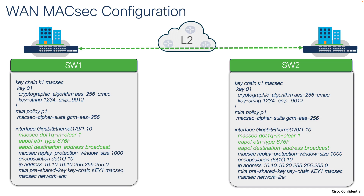Now let's look at what WAN MACsec configuration looks like. WAN MACsec configuration is very similar to traditional MACsec. In this example, we're establishing secure connectivity between Switch 1 and Switch 2 separated by a Layer 2 service provider or multiple Layer 2 hops. We configure a key chain and key string — the same on both switches — then enable an MKA policy and define the MACsec cipher suite to use.